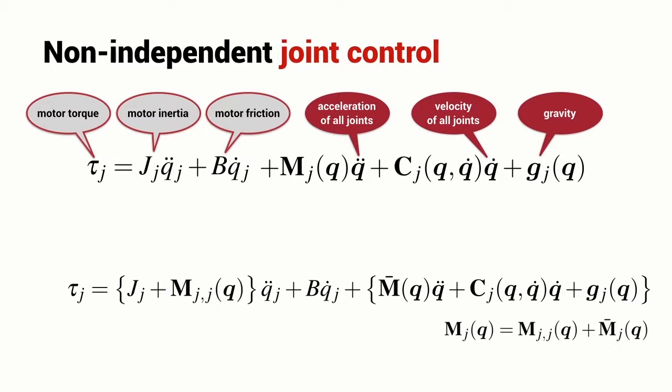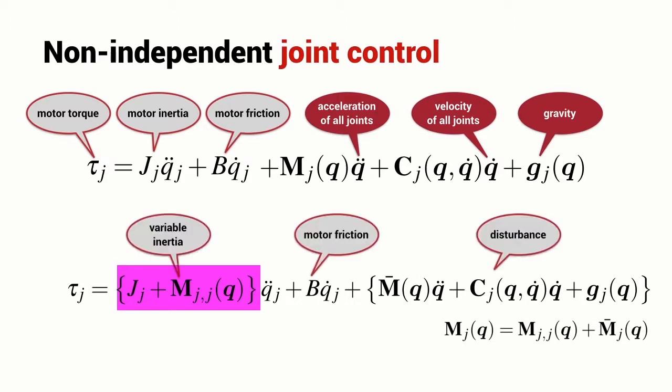The viscous friction and then we have all of the other terms at the end which are the disturbance torque. This term here is the inertia of the motor which is driving joint J. This is a variable inertia term that we pull out of the manipulator inertia matrix. We have the motor joint friction which is a function just of the motor driving the joint and then we have this rather complex disturbance term on the end which is the acceleration of all of the other joints, the coriolis and centripetal terms and the gravity term.